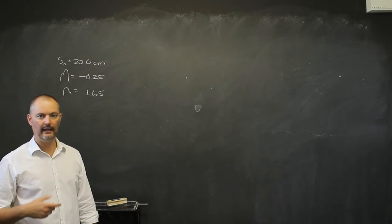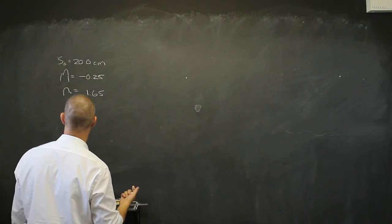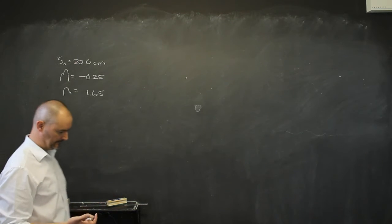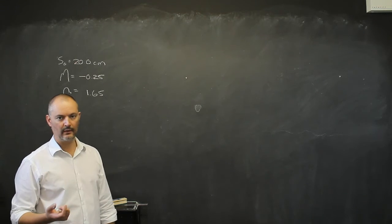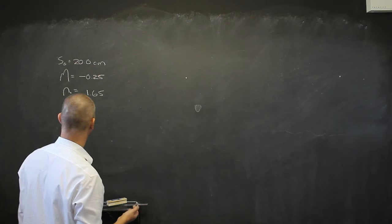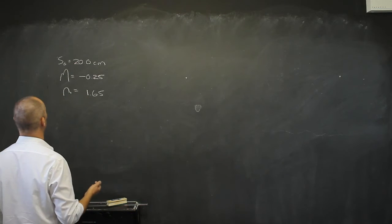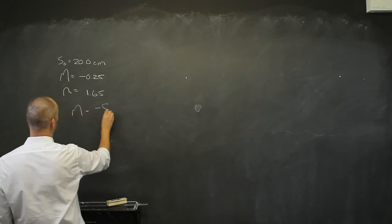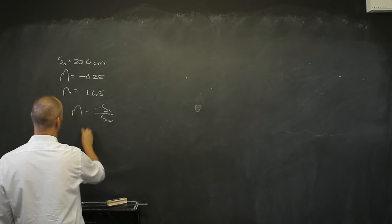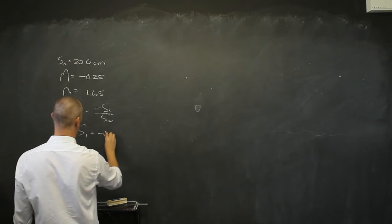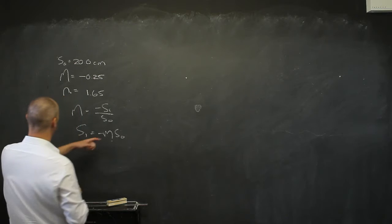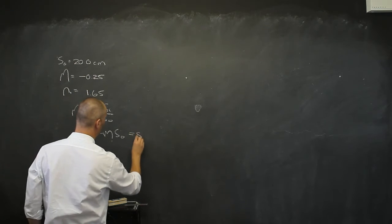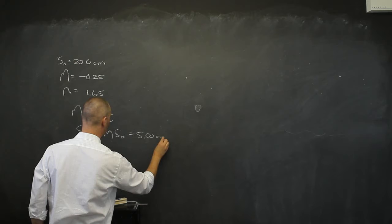What can I say about where this object is placed? Is it closer to the lens than the focal point, or is it farther away? Well, I know that m equals negative si divided by s0, which means si equals negative m times s0. So that will be negative negative 0.25 times 20, which equals 5.00 centimeters.